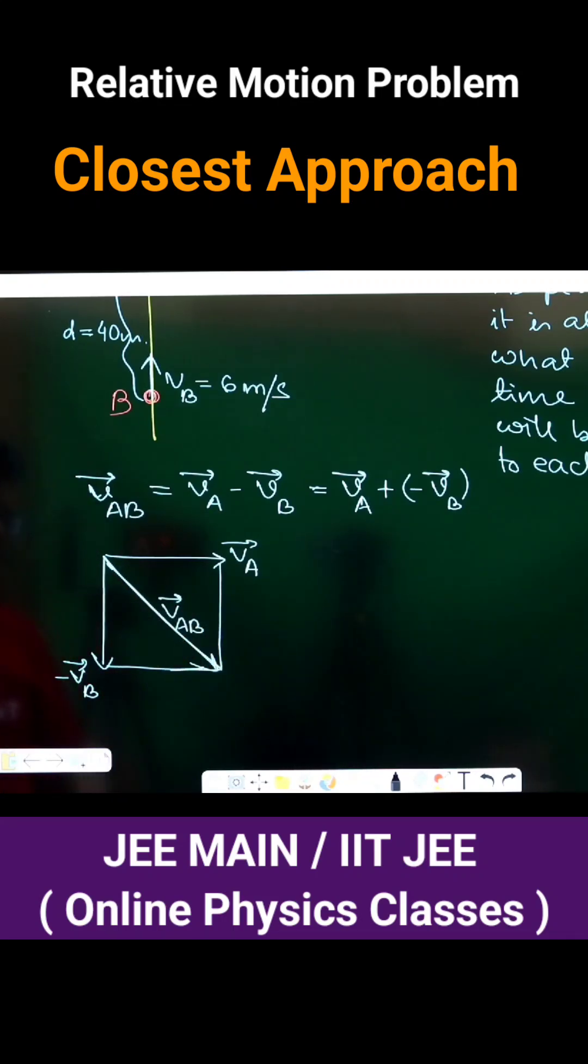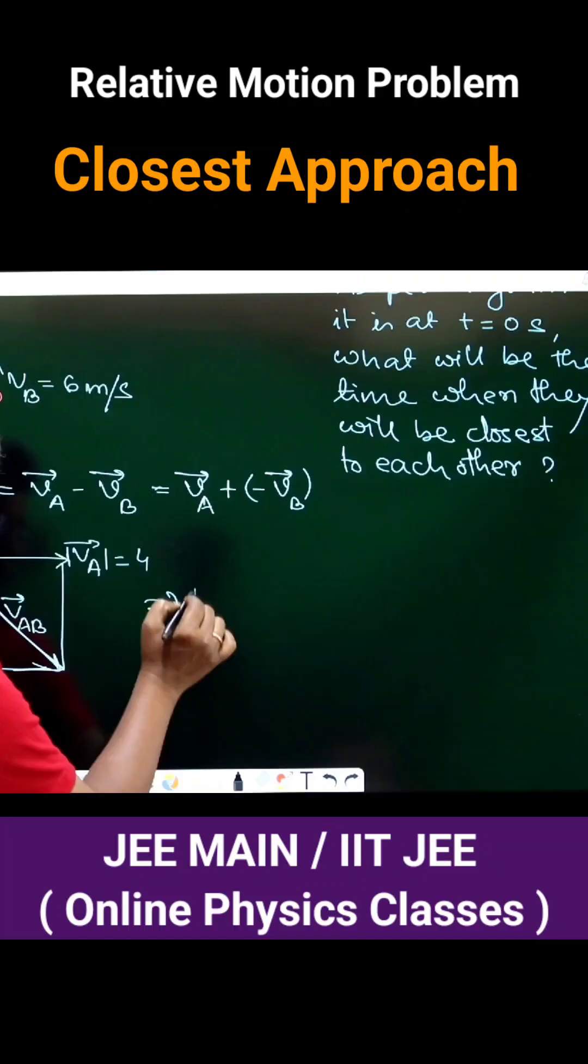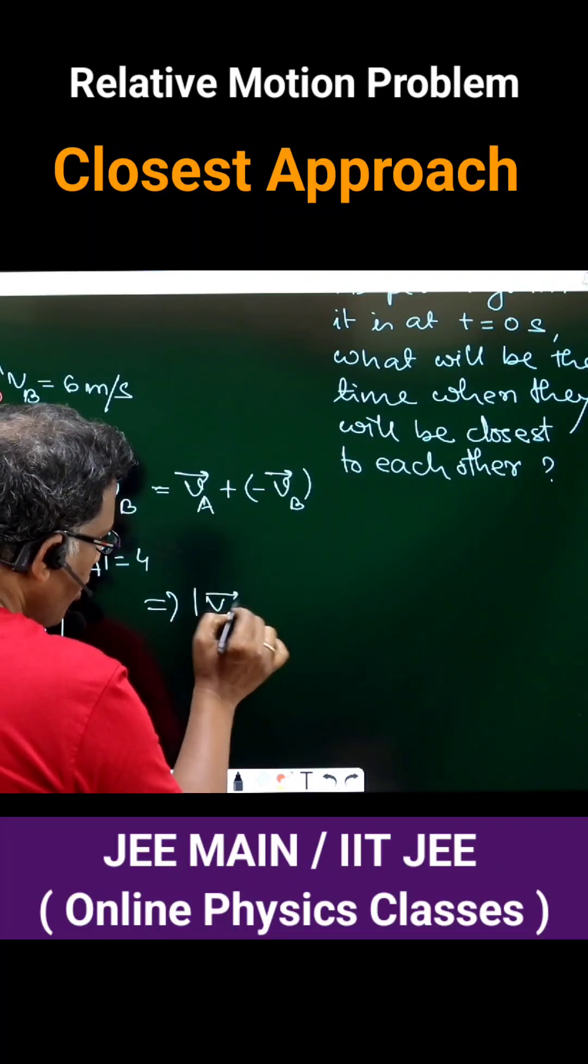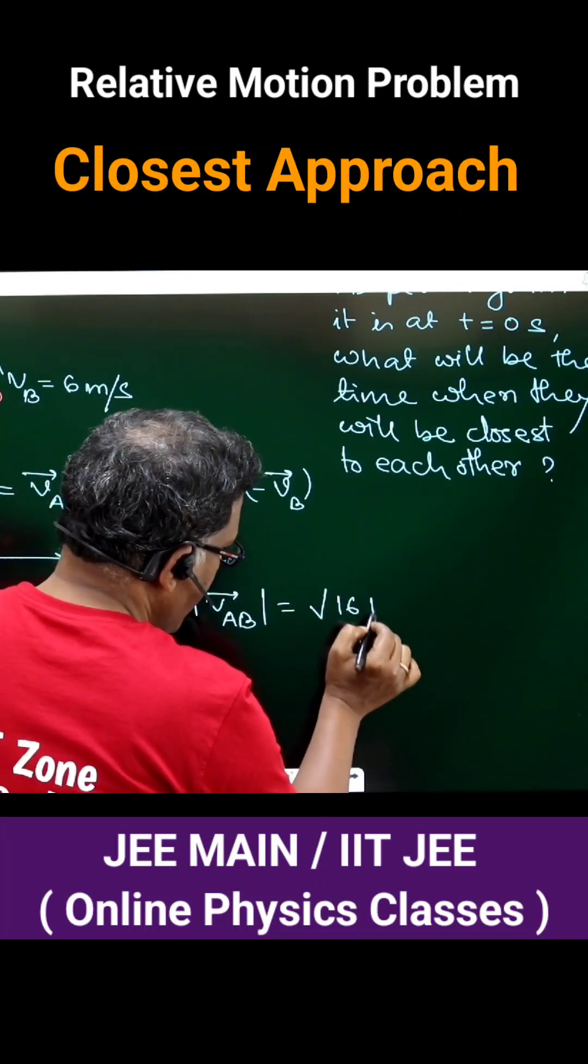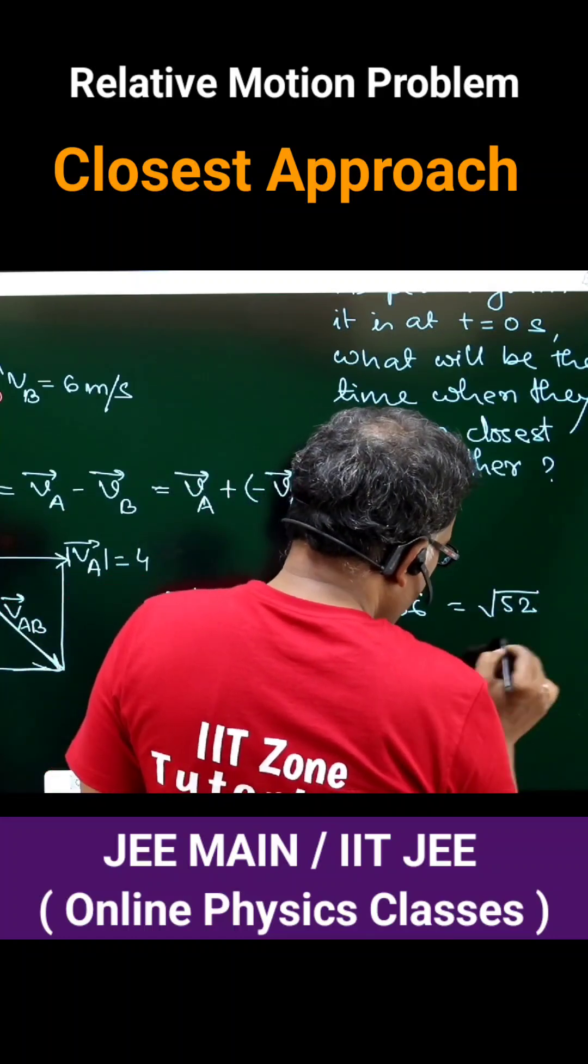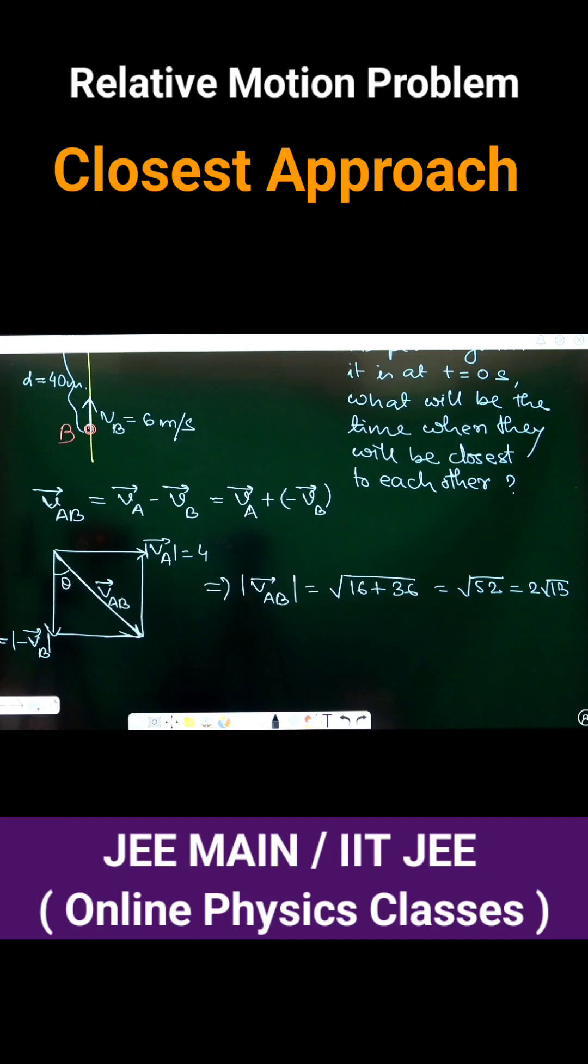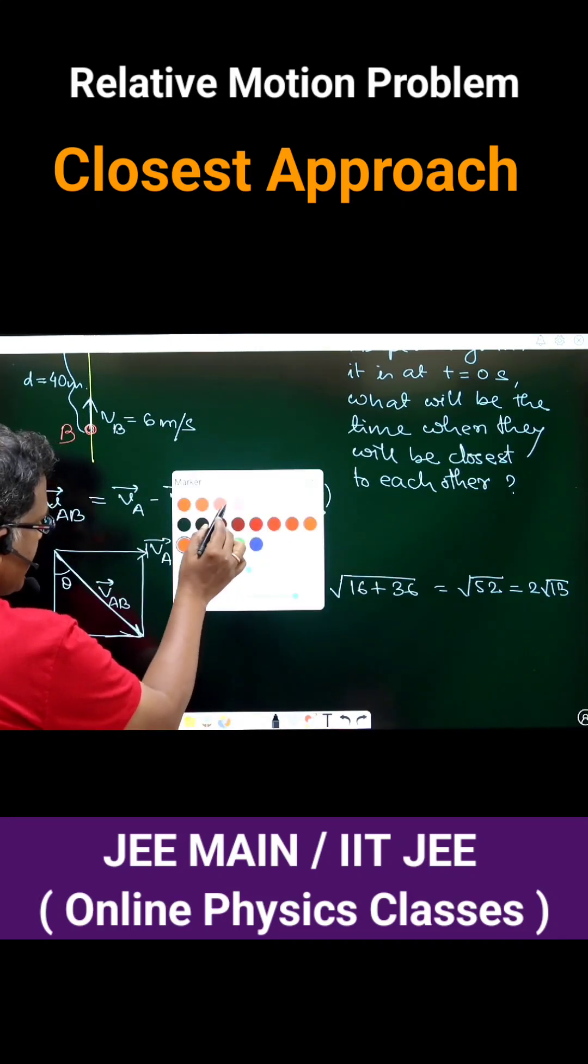We do not know the exact angle, but we can assume it's something like theta. The magnitude of VB is 6 and magnitude of VA is 4. So this implies that magnitude of VAB will be square root of 16 plus 36, which is square root of 52, so 2 root 13. This is the relative speed we are getting.